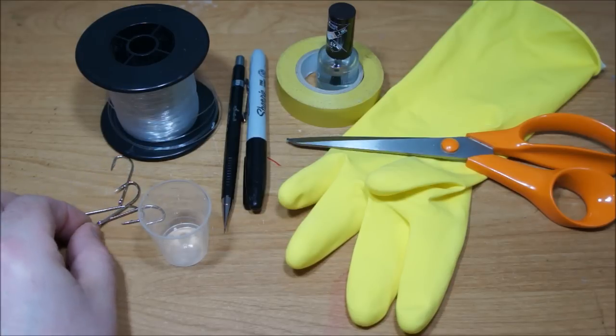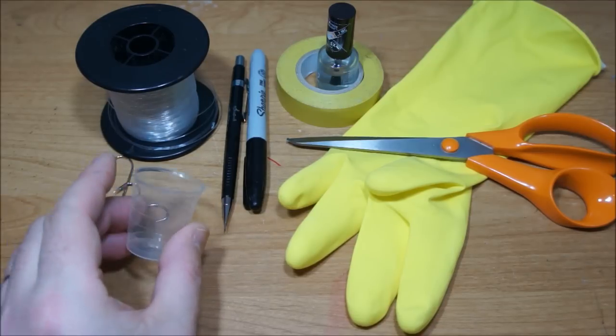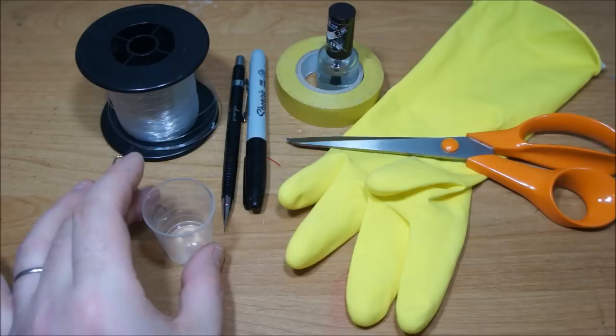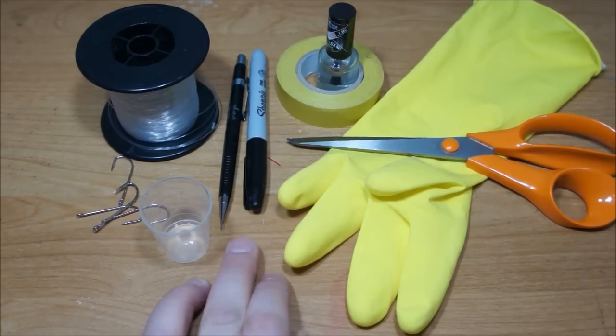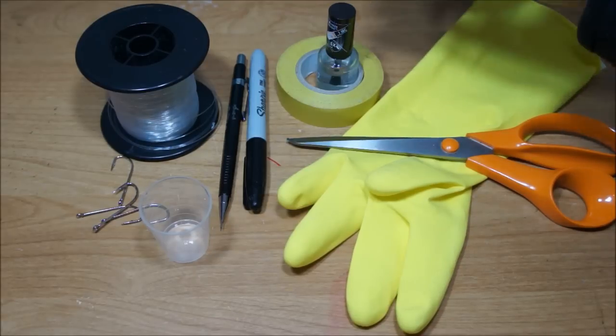I've used everything from size 1 to size 5-0 to tie this rig, so whatever you've got in your box. This is just an ordinary medicine cup that I'm going to use to draw around to make the curly tails. I've got a pencil, black marker which I'm going to use for just putting some eye spots on.